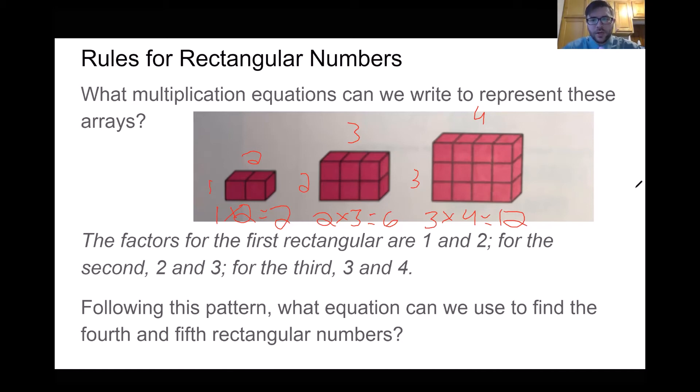Following this pattern, what equation can we use to find the fourth and fifth rectangular numbers? Take a second to see if you can follow this pattern to try to solve it. All right. So following this pattern, we went one times two to get the first one, two times three, three times four. I think the next one is going to be four times five. So if we do four times five, that's going to get 20. Let's see if that's what we end up with.